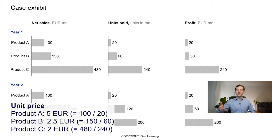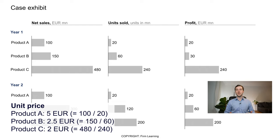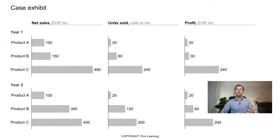For product B, 150 over 60 gives a unit price of 2.5 euro. For product C, 480 over 240 gives a unit price of 2 euro — so 5, 2.5, and 2. By doing that, you could also compare whether pricing changed between year one and year two, since pricing might influence how the numbers change year on year. If you did this, you would realize the pricing did not change — it stayed constant over time.